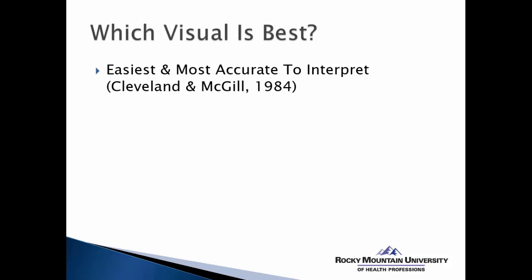What they discovered was that the easiest and most accurate chart for people to interpret was data points in position on a common scale — two data points on a scale of percentage that are quite easy to interpret. The next easiest and most accurate would again use a scale, but a non-aligned scale where, for example, one scale has a top point of 100% and another has a top point of 120%. Even though these two scales side by side are not aligned, we still do fairly well in interpreting the information on them.